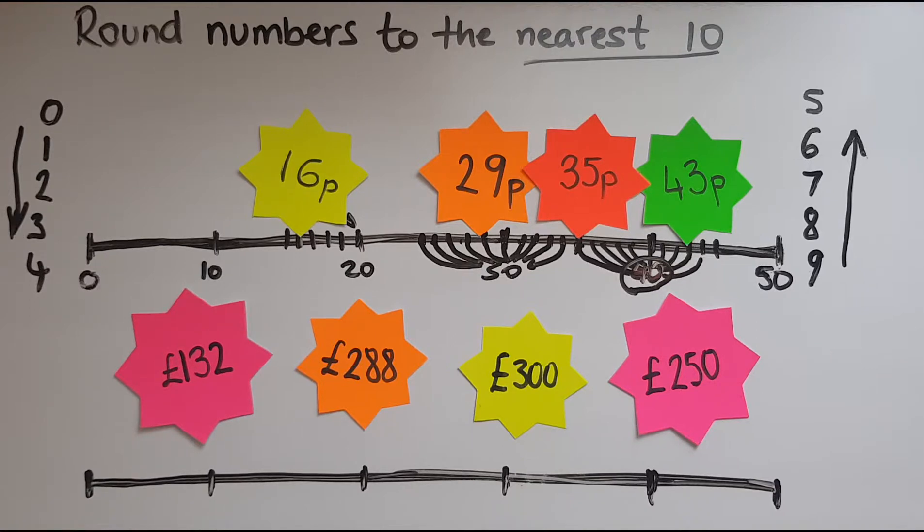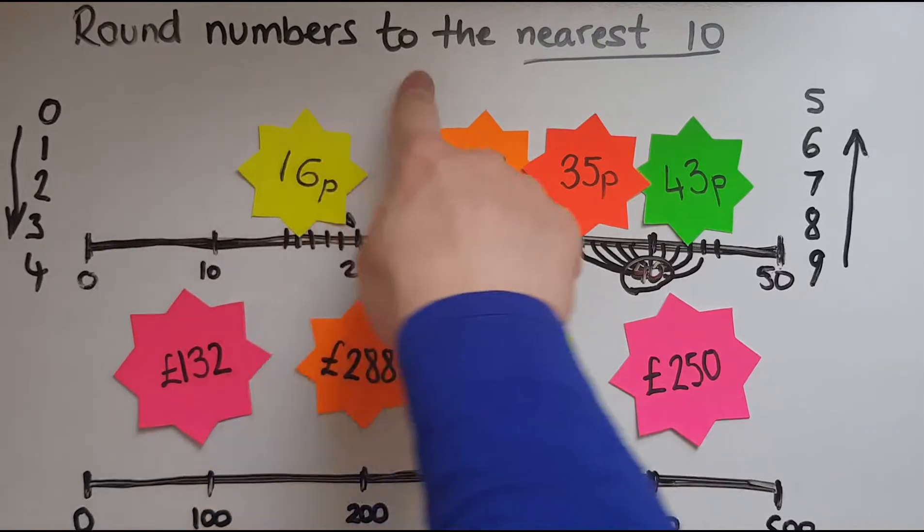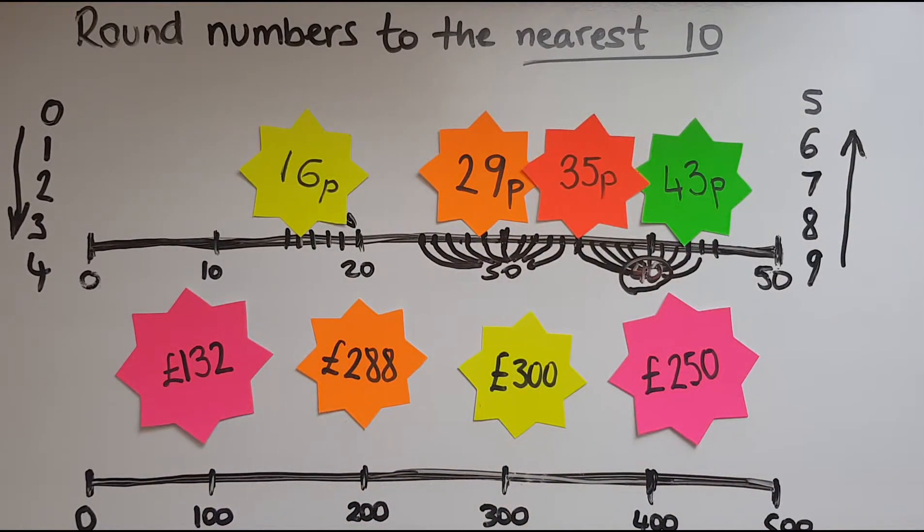Let's have a look now at rounding some larger numbers to the nearest 10. So we've got hundreds in here. So I will try and place these but I'll split the divisions first. 0, 100, 200, 300, 400, 500. Now again we're rounding these numbers to the nearest 10. So we'd still be counting as 0, 10, 20, 30, 40, 50, 60, 100, 110, 120, 250. So we're counting in tens throughout.